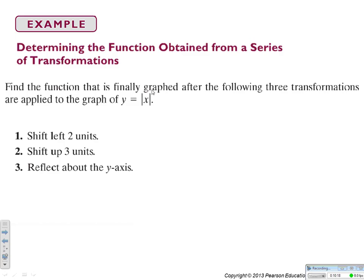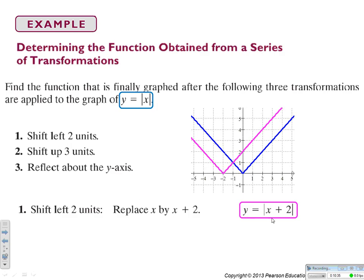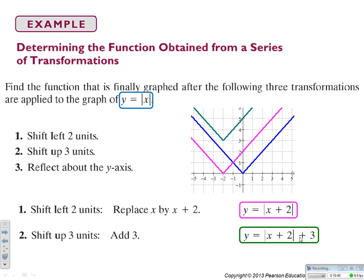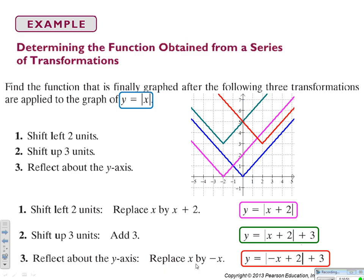Here's a combined example: starting with y equals absolute value of x, we shift it left two units, up three units, and reflect it about the y-axis. We add 2 inside the function to shift left, add 3 to shift up three, and replace x with negative x to reflect about the y-axis.